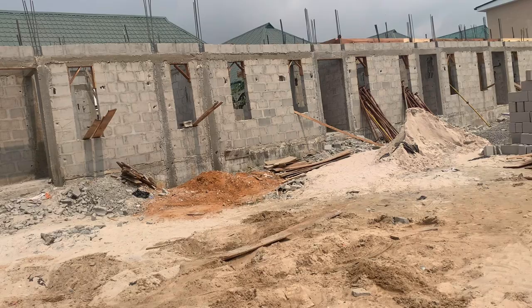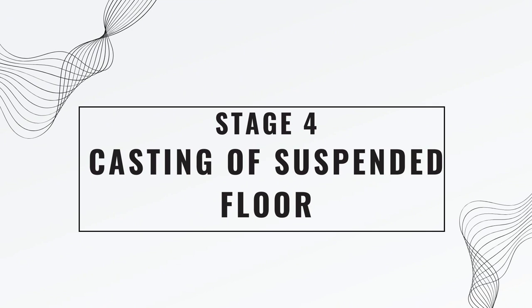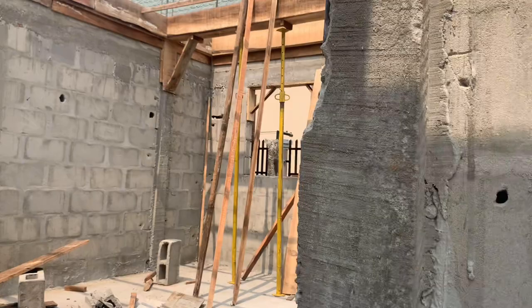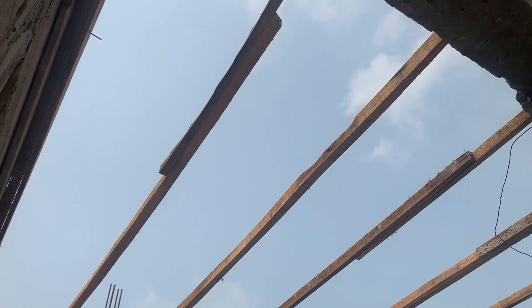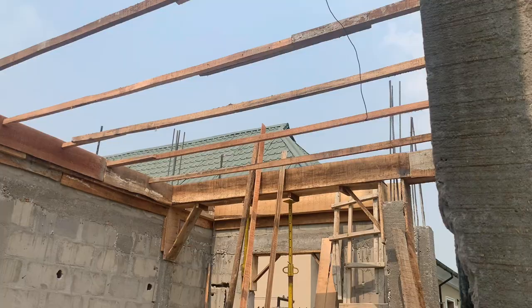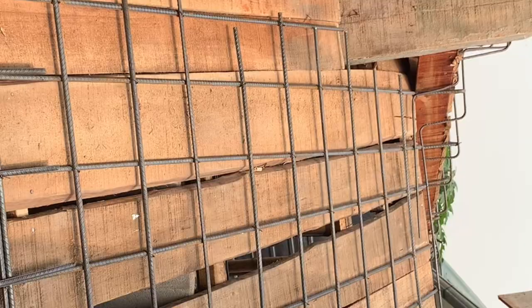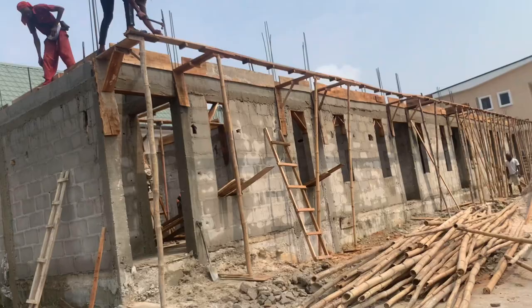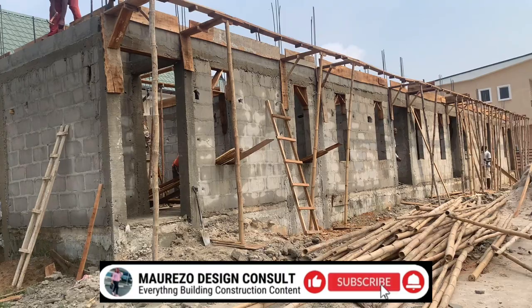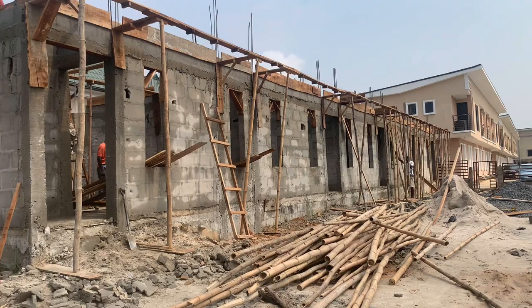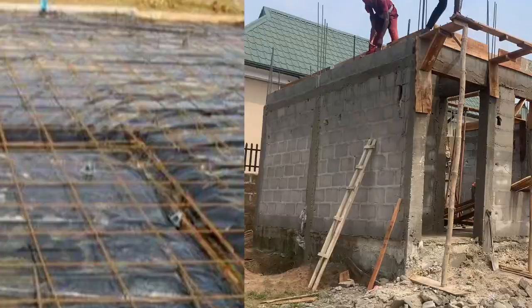Next we go to the casting of the suspended floor. As soon as the desired headroom is achieved, the formwork for the suspended floor follows — as you can see in the video — and the formwork for the staircase is done simultaneously. This formwork can be done with planks or construction panels. The beam for the suspended floor is then tied by the iron benders.